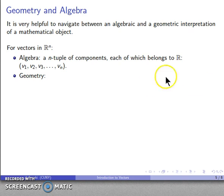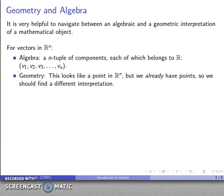Geometrically, when we describe a vector it looks a lot like how we describe a point—it looks like a point in R^n. However, we already have points, so we'd like the vector to be something different from a point. What can we do?